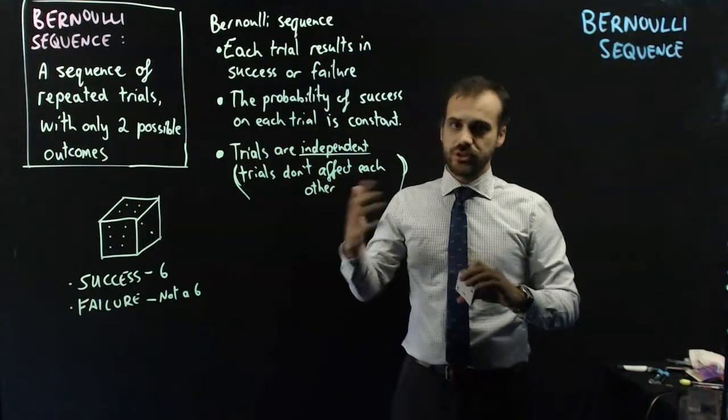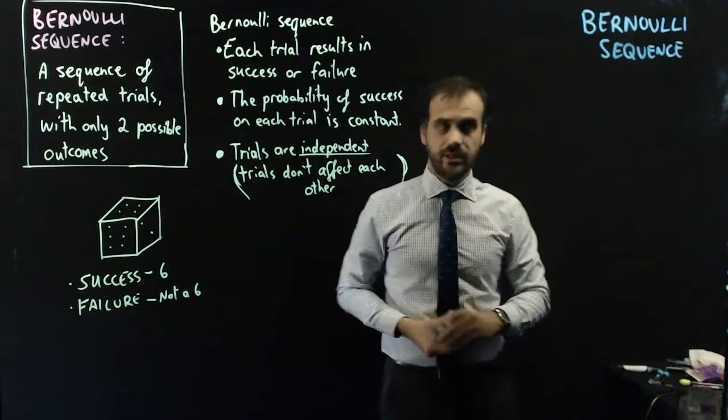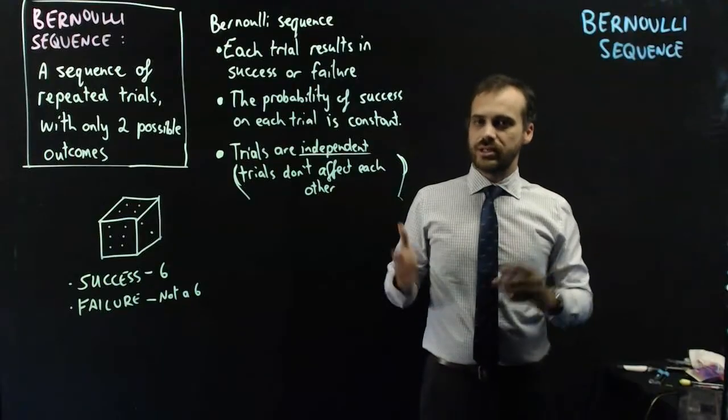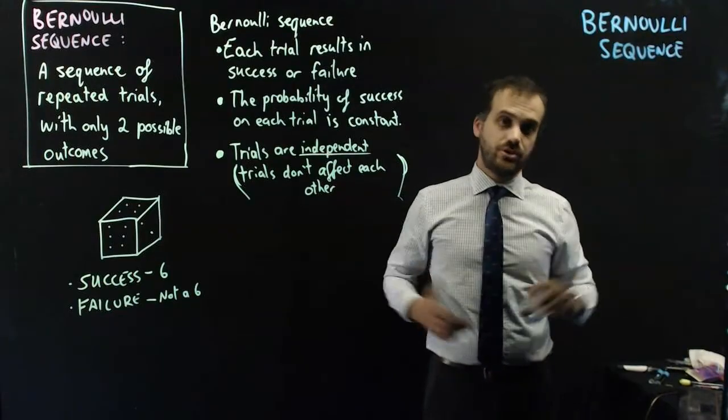And, the trials are independent. They're not affecting each other. So, that is a Bernoulli sequence. And, next, we're going to be able to use that to determine something called a binomial distribution.